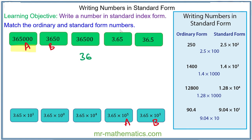For 36,500 we have 3.65 multiplied by 10,000. So 3.65 multiplied by 10 to the power of 4. So this would match with this.